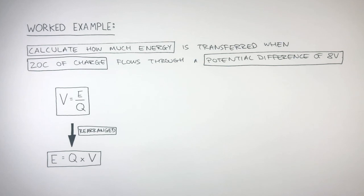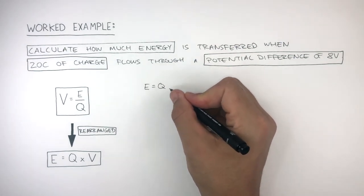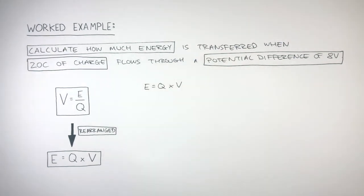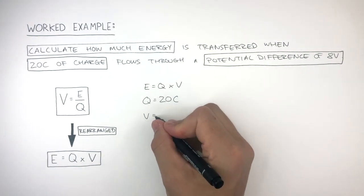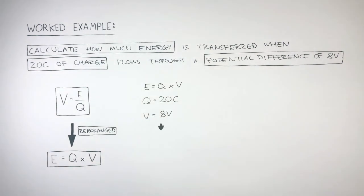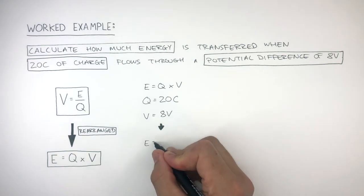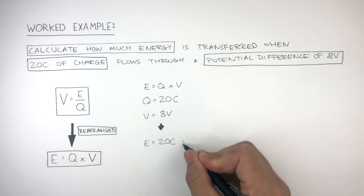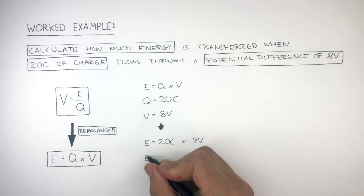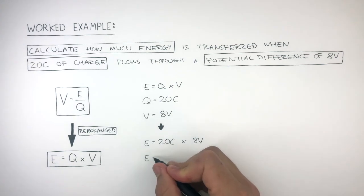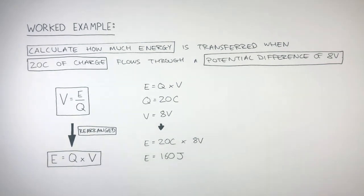So we use the equation E equals Q times V, where Q equals 20 coulombs and V equals 8 volts. Inputting this data into the equation, we get E equals 20 coulombs times 8 volts. So E, the energy transferred, equals 160 joules.